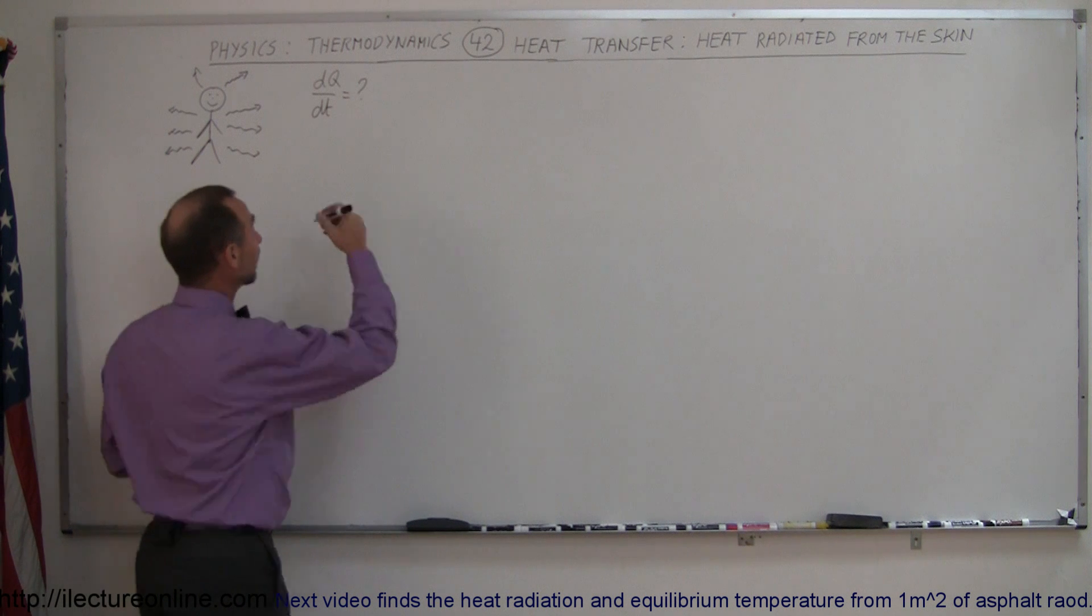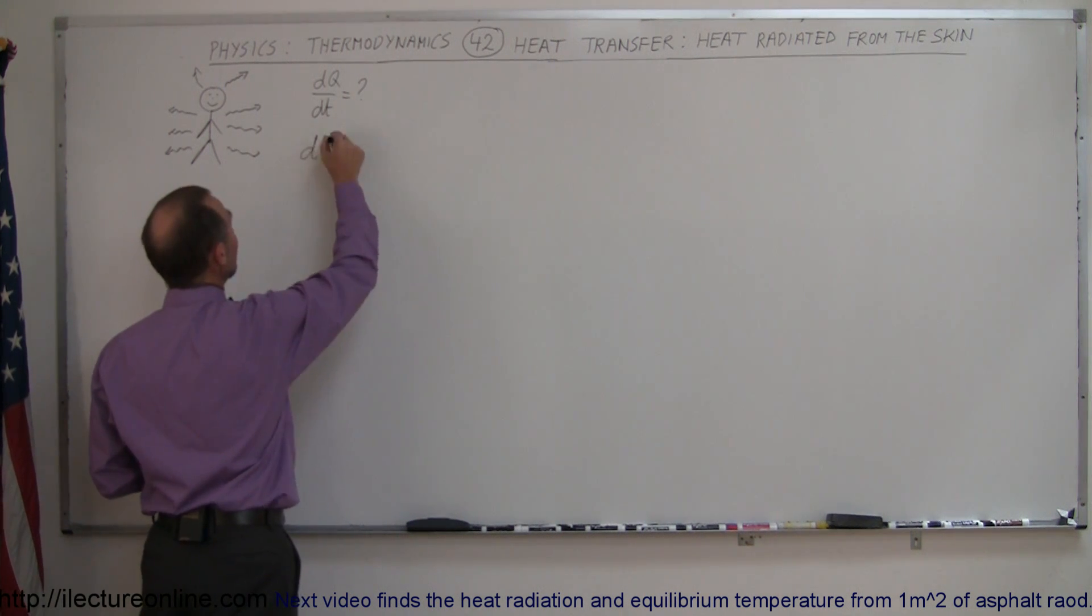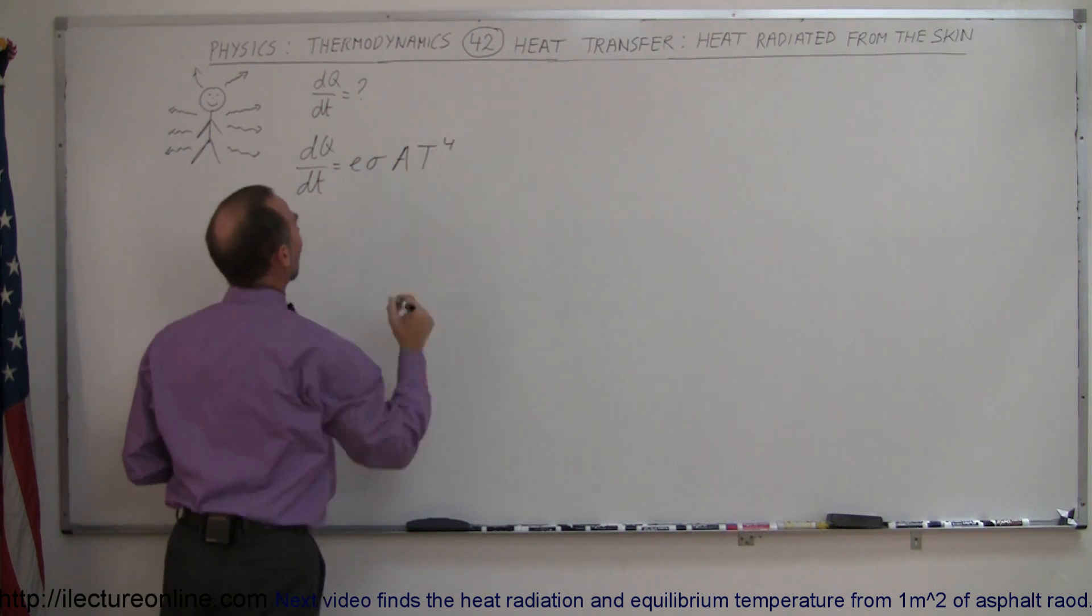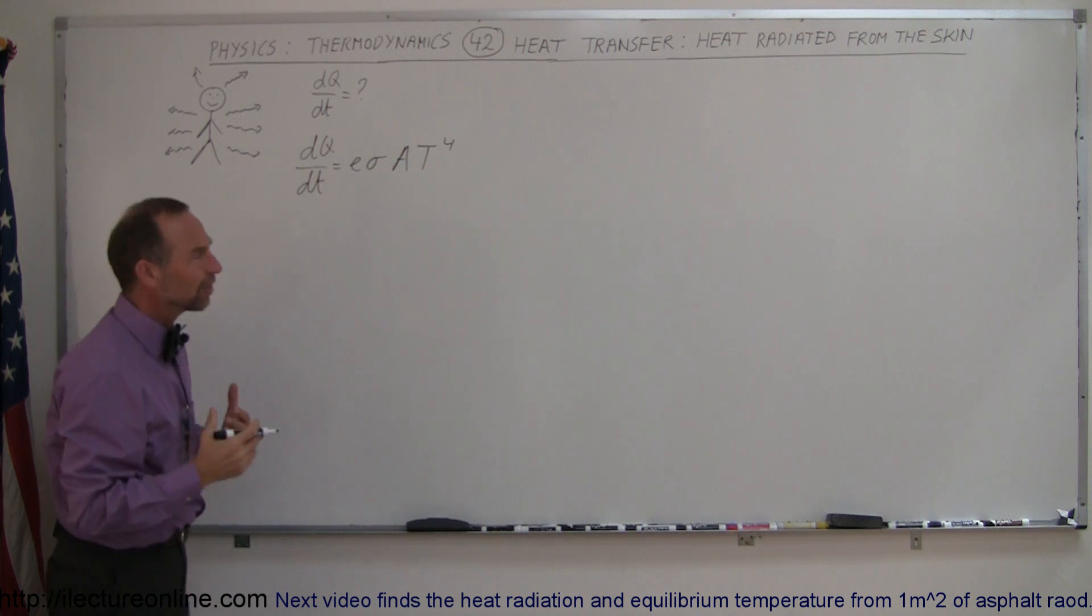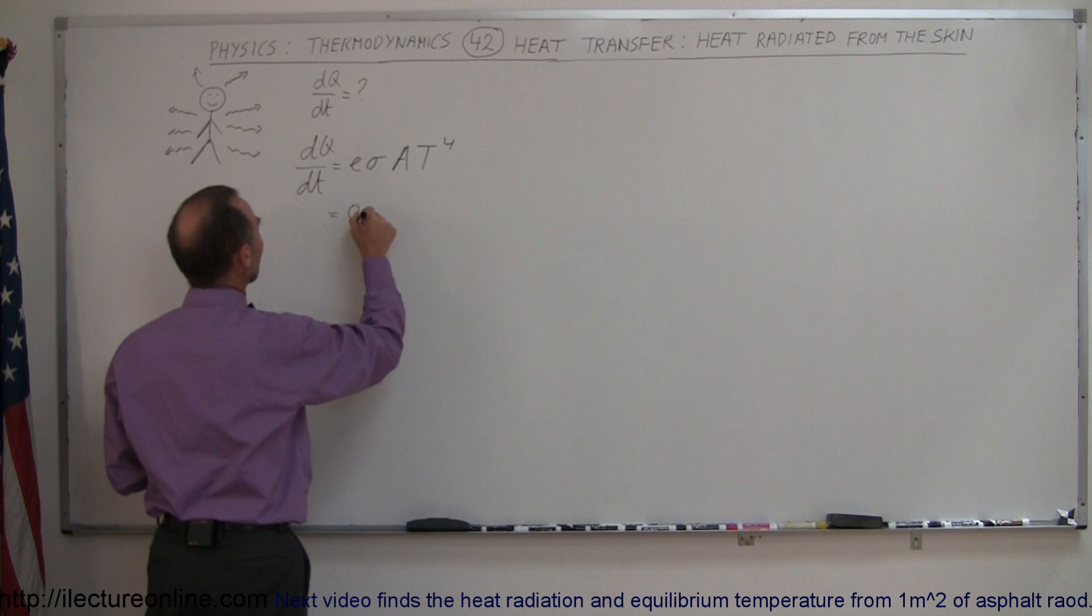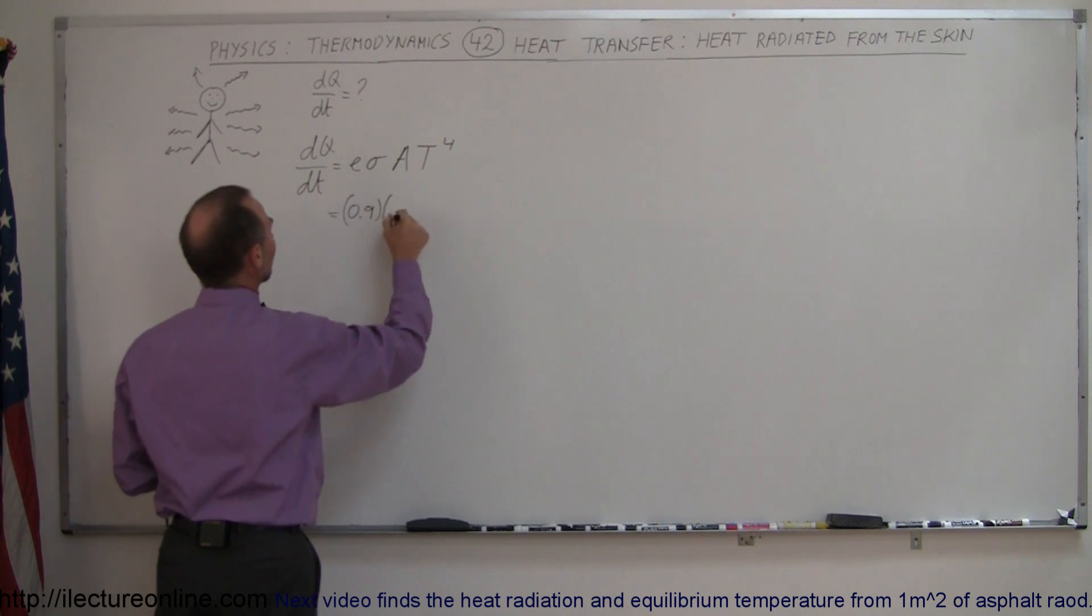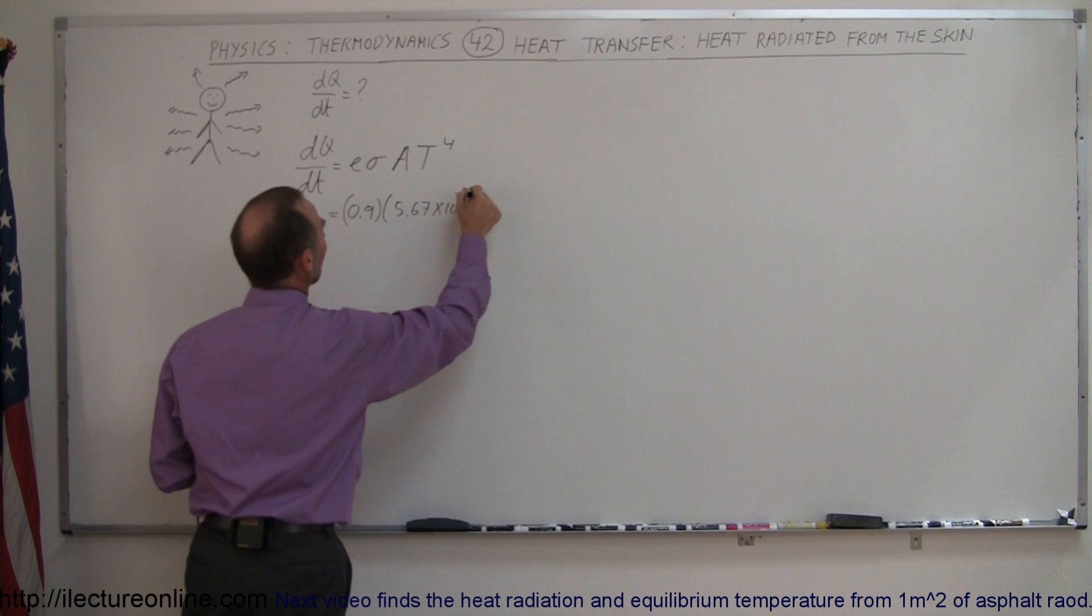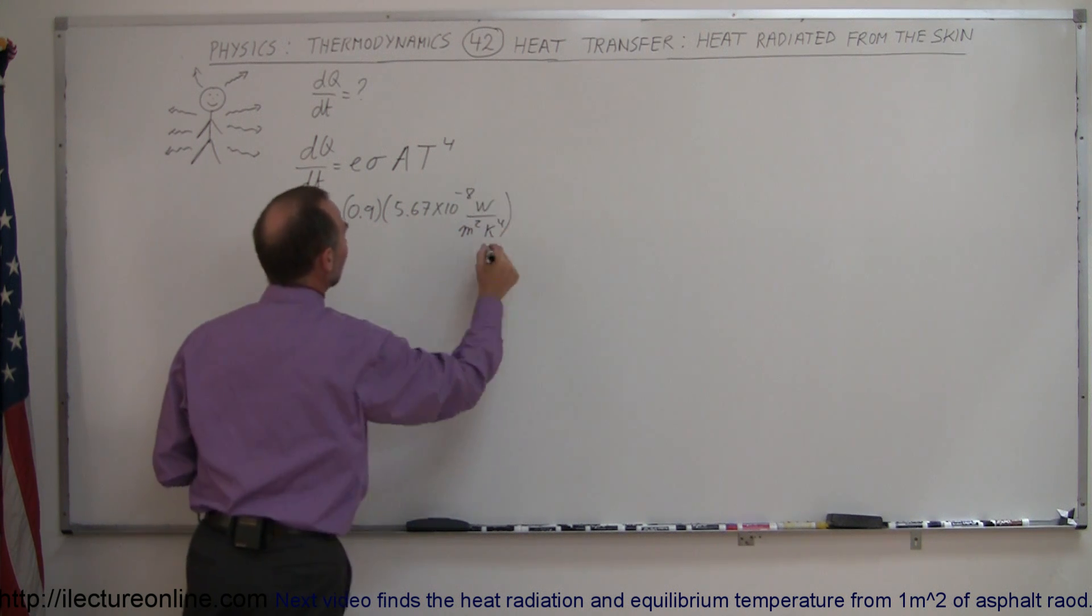The way to calculate that is using dQ/dt equals E sigma times the surface area times the temperature to the 4th power. Here the emissivity of the skin is probably around 0.9, so this is 0.9. Sigma is still the same, 5.67 times 10 to the minus 8 watts per square meter times Kelvin to the 4th power.